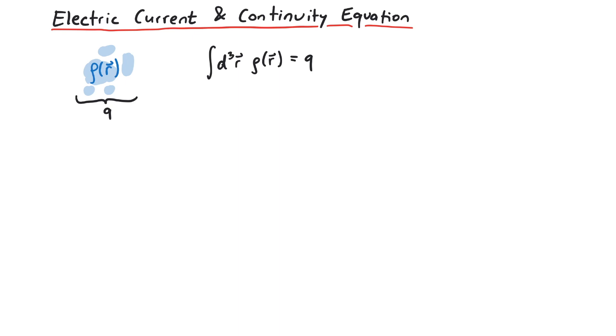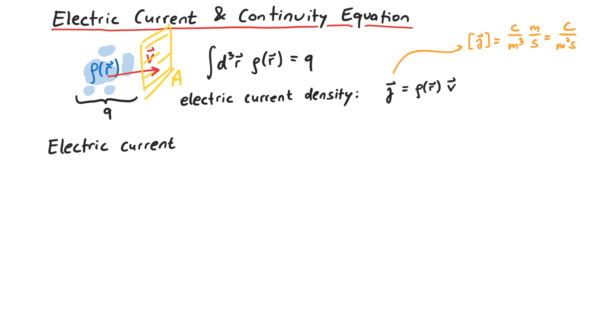Now if this charge distribution travels with a velocity v, we get the electric current density j. This current density has dimensions of Coulombs divided by square meters and seconds. The flux through some area A is called current strength, or electrical current.